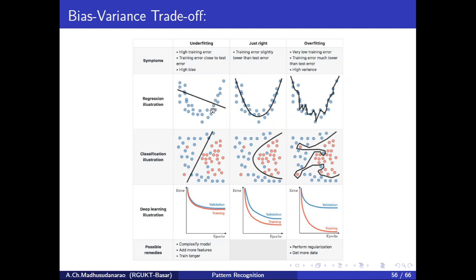Now you can see that this line can't model this data perfectly. There is so much error. With a line, you can't model this because it looks like a non-linear function. A second-order function might fit well to this data — for example, y equals w1x plus w2x-squared plus w-naught. This might fit well to this particular data.